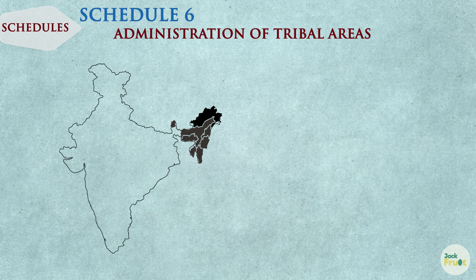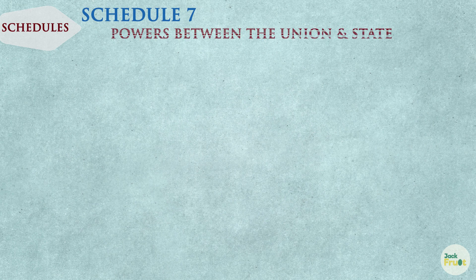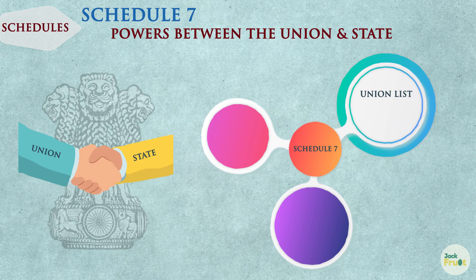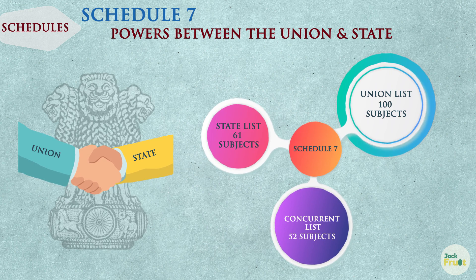The 6th schedule contains the provisions relating to the administration of tribal areas in the states of Assam, Meghalaya, Tripura and Mizoram. The 7th schedule deals with the division of powers between the Union and the State in terms of 3 lists. List 1 is the Union list — it has 100 subjects, and the Central Government has exclusive right of legislating on these subjects. List 2 is the State list — presently it has 61 subjects, and the State Government has exclusive right over these subjects. List 3 is the Concurrent list — it has 52 subjects presently. Both the Union and the State have the power to legislate on subjects in the concurrent list; however, in case of conflict, the law made by the Central Government will supersede.